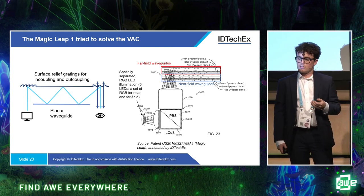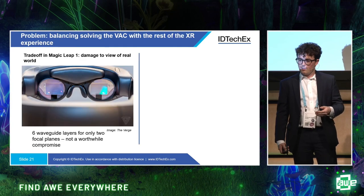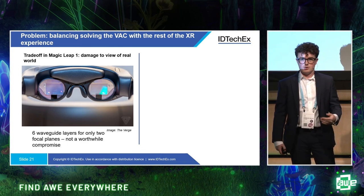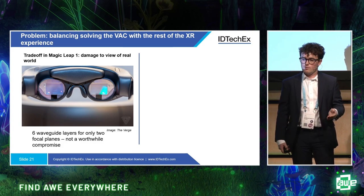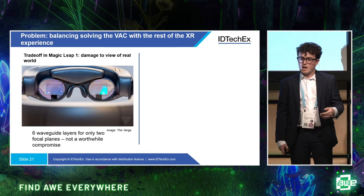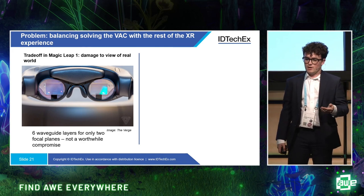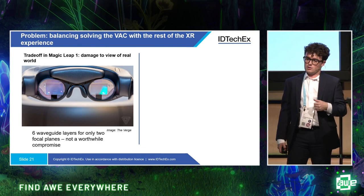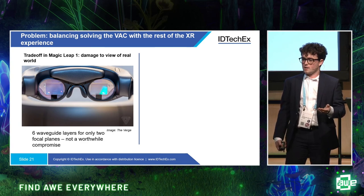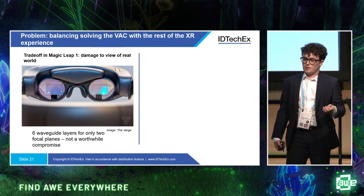As far as I'm aware, Magic Leap One is the only solution that actually hit the market to address the vergence-accommodation conflict. But we all know what happened to it, and I think it's a good indicator of the issues these solutions tend to bring. We have to balance solving this conflict with the rest of the XR experience. One really significant trade-off in the first Magic Leap device was damage to the view of the real world — you're looking through six layers of waveguide plus cover glass for only two focal planes. That affects transparency, the darkness you can see through, and image quality, and Magic Leap chose to abandon this in their second device.